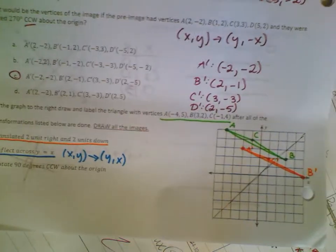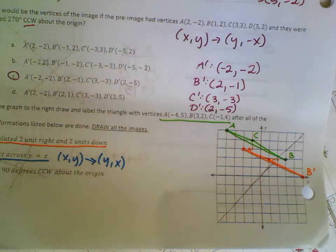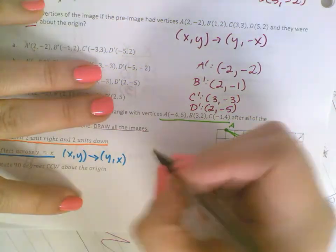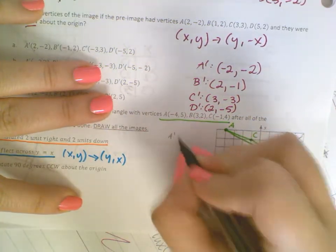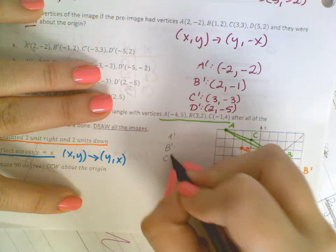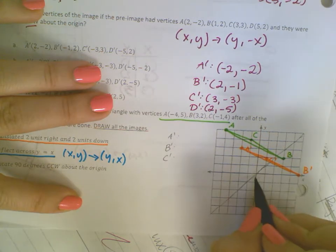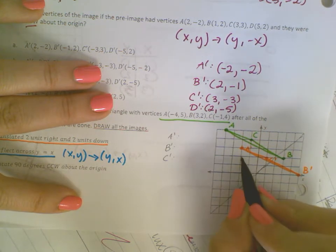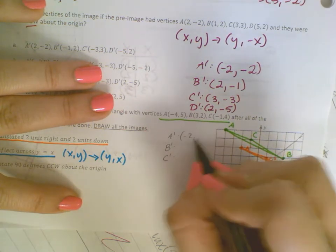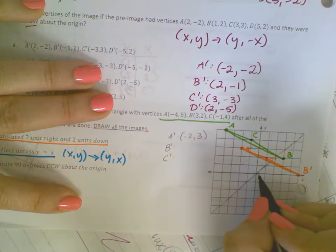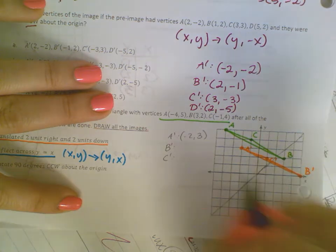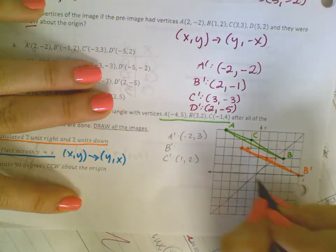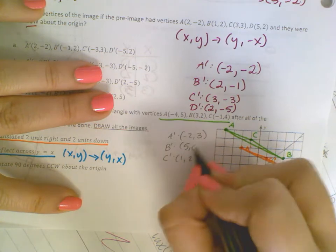So if I go ahead and plot my coordinates, or I'm sorry, write down my coordinates for A prime, B prime, and C prime. A prime is at negative 2, 3. C prime is at 1, 2. And B prime is at 5, 0.